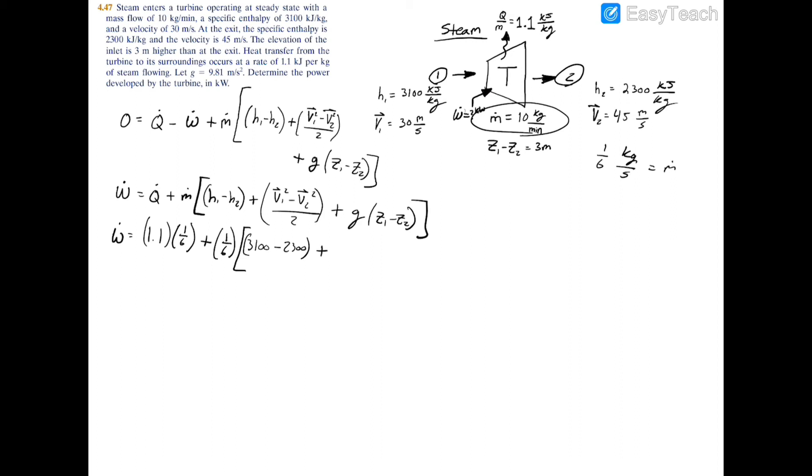Now the tricky part is the velocity. We're going to add v1 squared, which was 30 squared, minus v2 squared, which was 45 squared, and divide all that by two. Notice that here we have meters per second, but before that we actually had kilojoules—we had a prefix of kilo for the enthalpy.